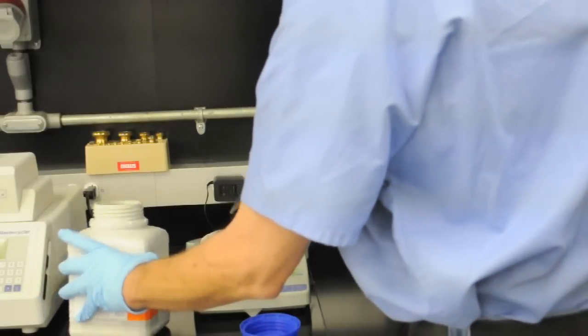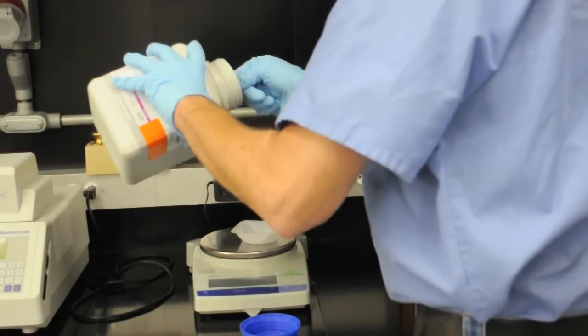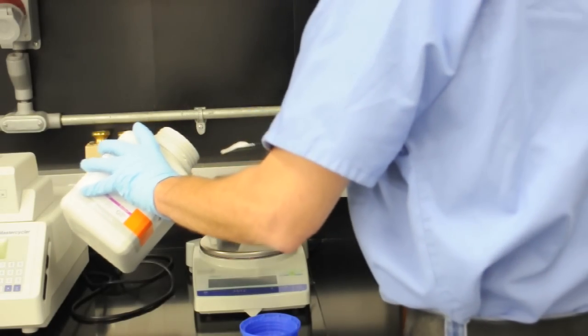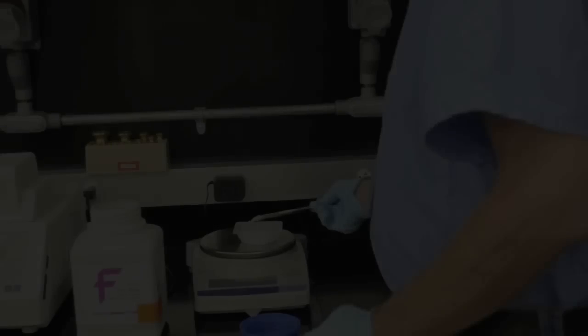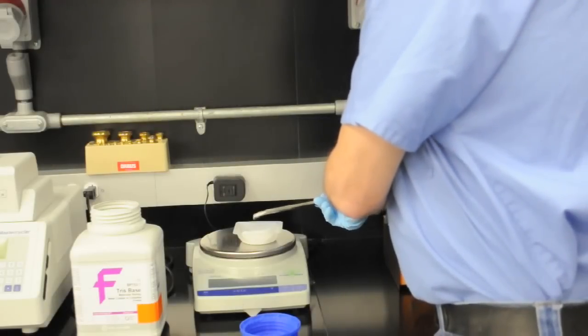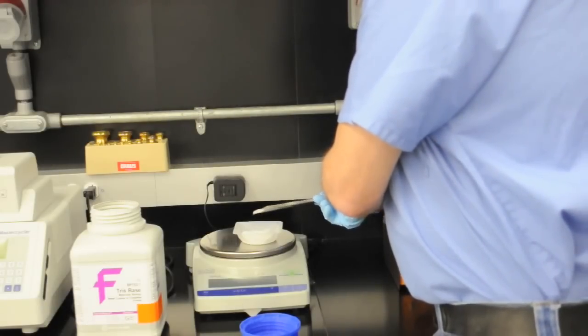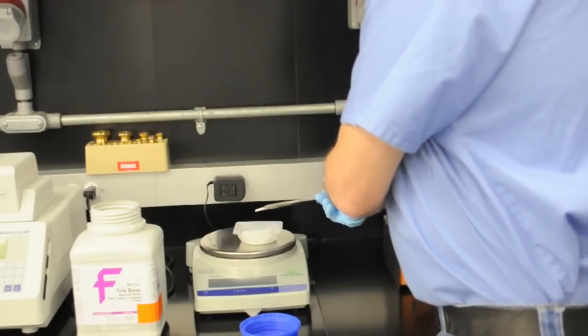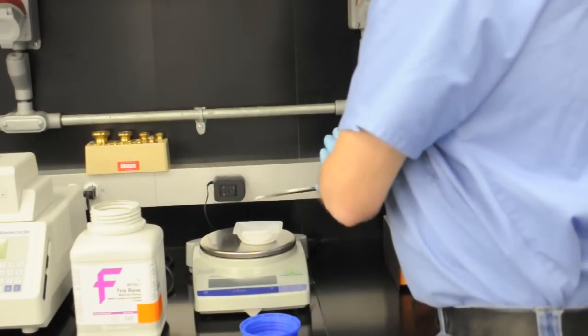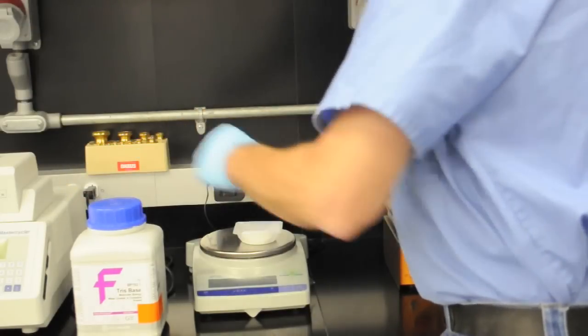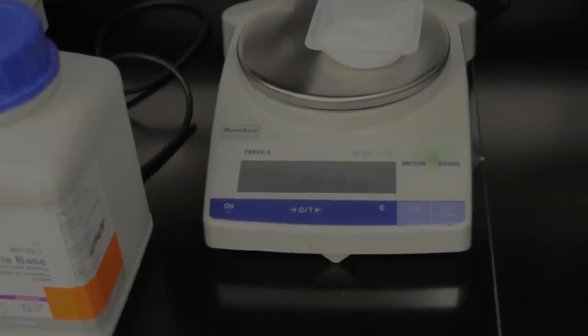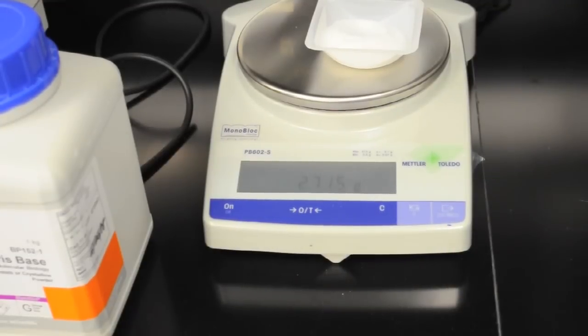Now we start transferring the solid tris base with the spatula. You want to take care not to spill it onto the balance because anything that gets spilled on the surface has to be cleaned up. When you get close to the final end point, it's useful sometimes to tap small amounts of it onto the weigh boat and discard anything that's not used. There you can see the balance is nice and stable exactly on the amount called for in the SOP.